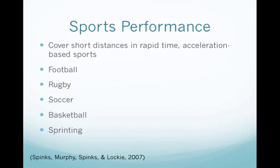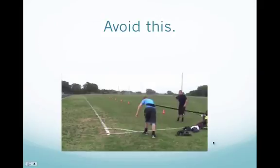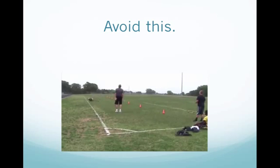With resisted sprinting, improving the acceleration phase will see benefits to sports performance — particularly in any sport that covers short distances in rapid time and involves lots of accelerations, such as football, rugby, soccer, basketball, and of course sprinting. The use of resistance sprinting is mainly for developing greater force production in the musculature during the acceleration phase, resulting in increased lower body strength and power, an increase in the horizontal stretch-shortening cycle, and hypertrophic changes in the muscle. Resistance sprinting can be done with multiple forms including parachutes, weighted vests, and sled pulling, not limited to resistance bands. Thank you for listening to this lecture.